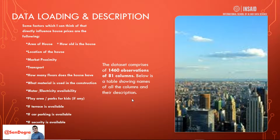We uploaded the data and figured out the different columns available. The dataset had 1460 observations and 81 columns. These 81 columns included: area of the house, age of the house, location, distance from the market, transport availability, number of floors, exterior quality, utilities, play area, garage, and other factors which affect the decision on buying a house. We described and analyzed this data.